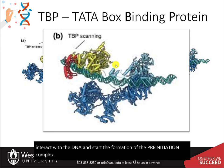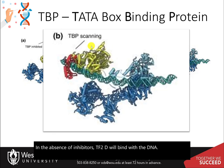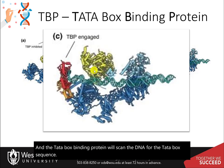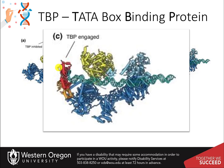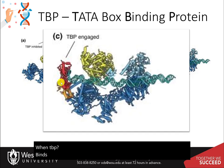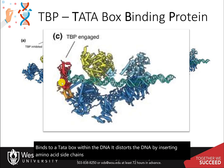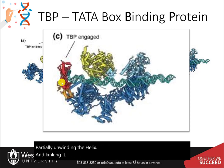In the absence of inhibitors, TF2D will bind with the DNA and the TataBox binding protein will scan the DNA for the TataBox sequence. When TBP binds to a TataBox within the DNA, it distorts the DNA by inserting amino acid side chains between base pairs, partially unwinding the helix, and kinking it. Note that TBP is released from TF2D during this process.